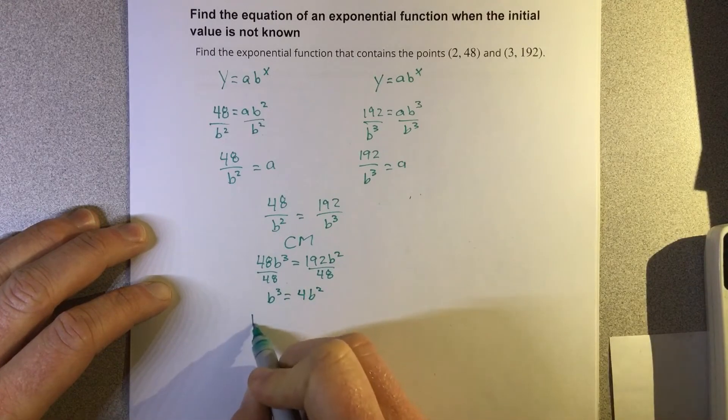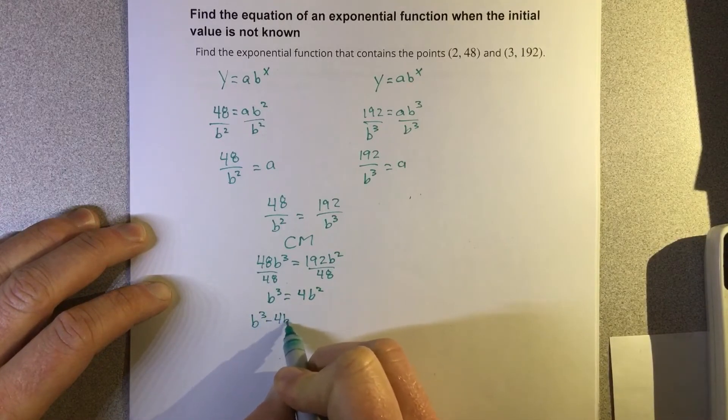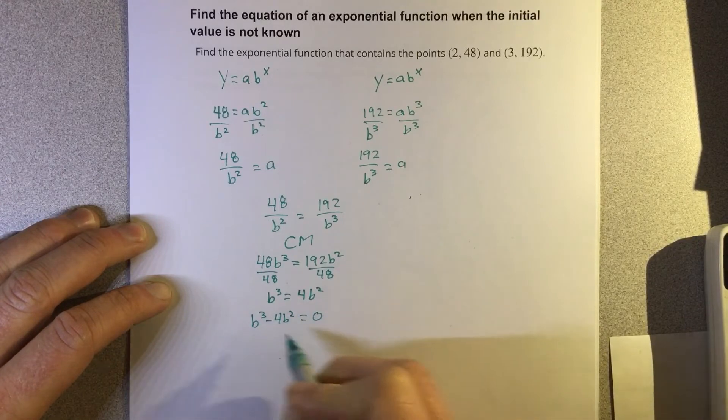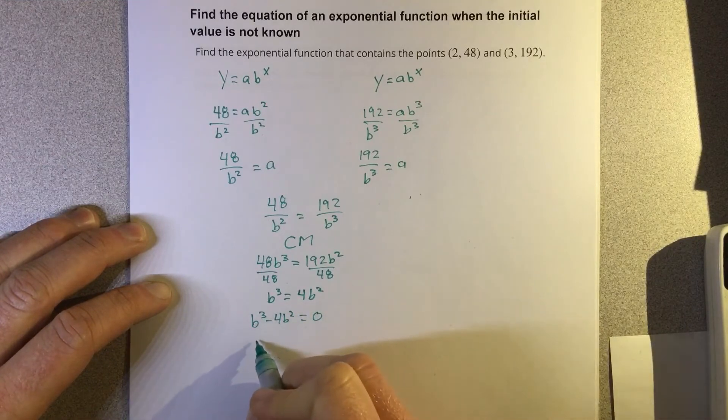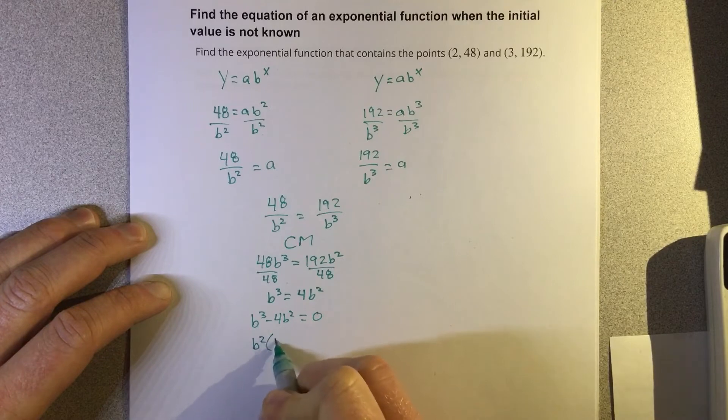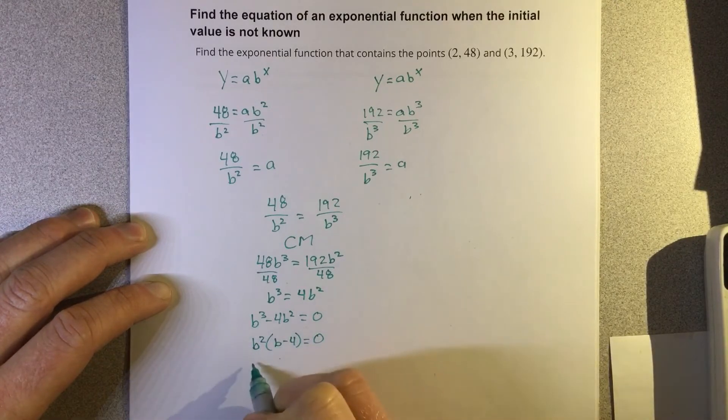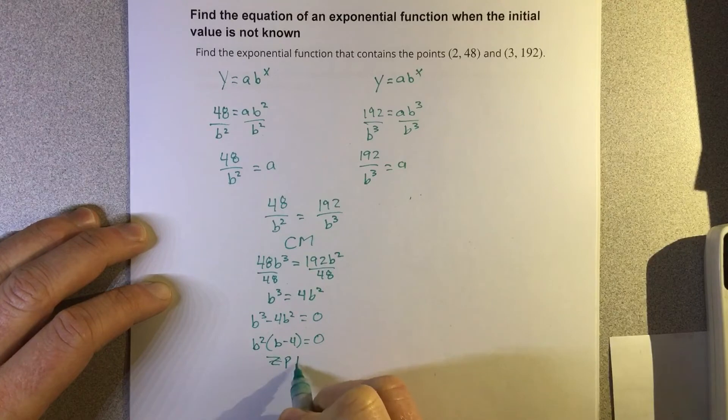We're going to subtract this to the other side, so it's b cubed minus 4b squared equals 0. We're going to factor b squared out, so we get b squared times (b minus 4) equals 0. That's the zero product property.